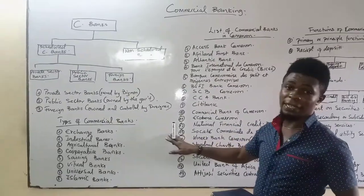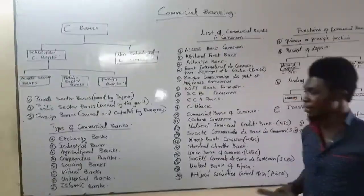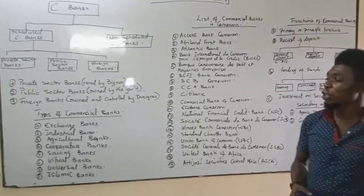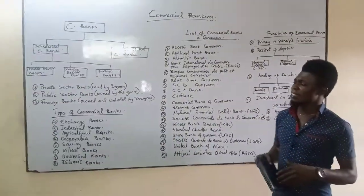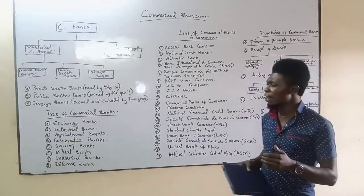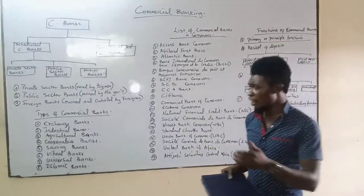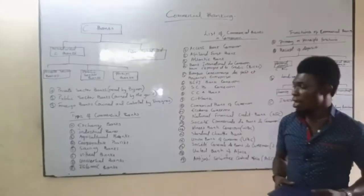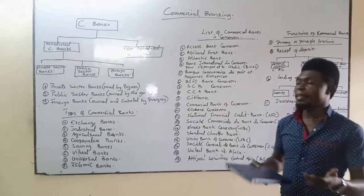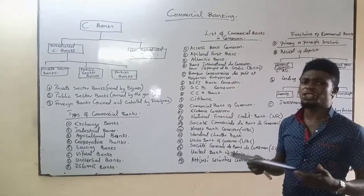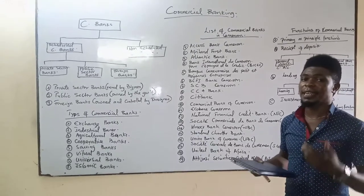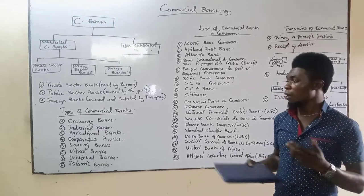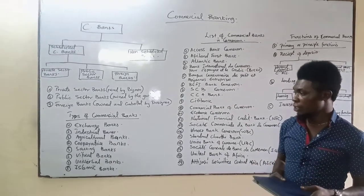Now let's look at the types of commercial banks — the various forms commercial banks can take. The very first form of commercial banks is called the exchange bank. Exchange banks are banks that are principally created to facilitate exchange of currencies. They facilitate international trade by exchanging currencies of different denominations.